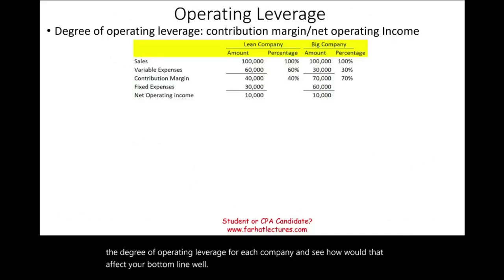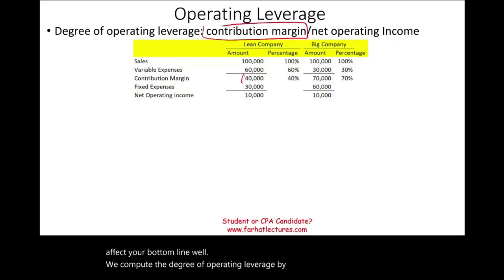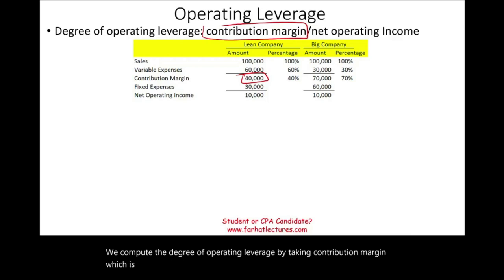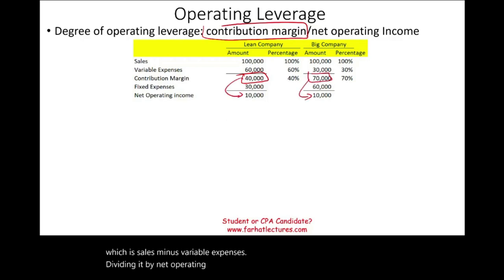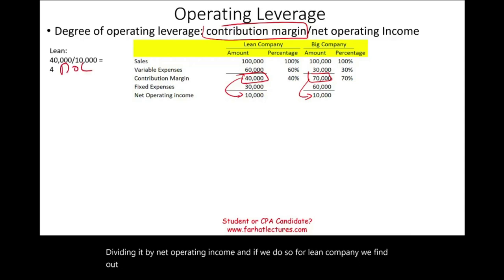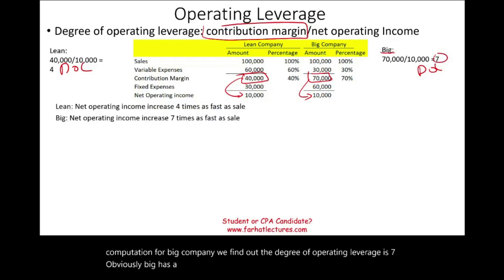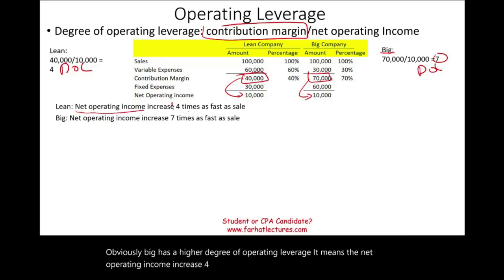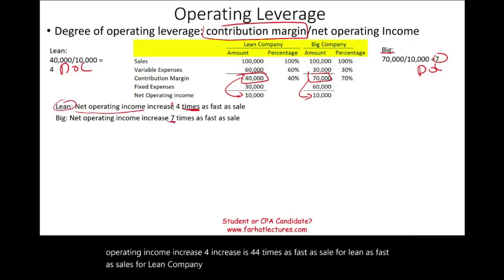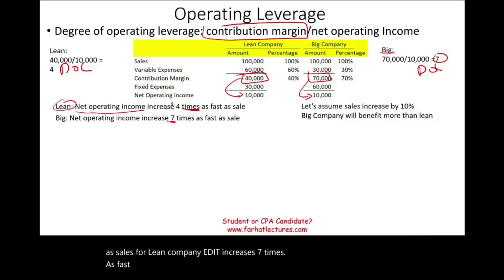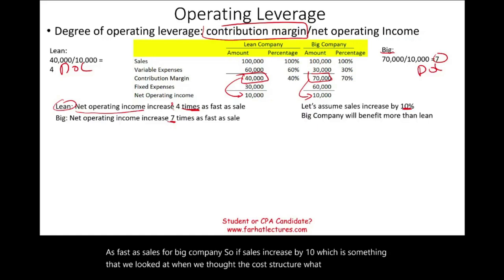We compute the degree of operating leverage by taking contribution margin — which is sales minus variable expenses — divided by net operating income. For lean company, the degree of operating leverage equals 4. For big company, the degree of operating leverage is 7. Big has a higher degree of operating leverage, meaning net operating income increases four times as fast as sales for lean company, and seven times as fast as sales for big company. So if sales increase by 10%, what happens to the bottom line for each company?